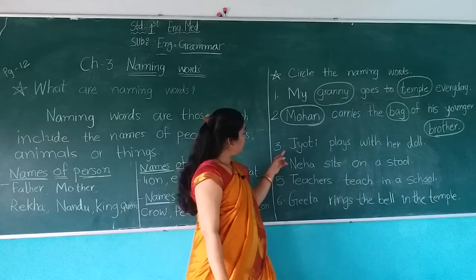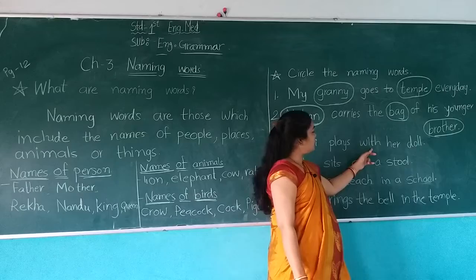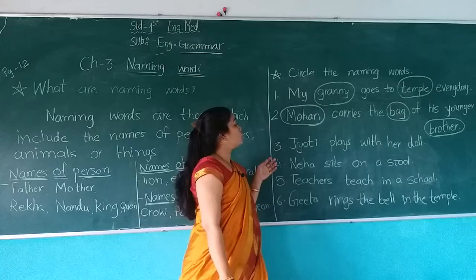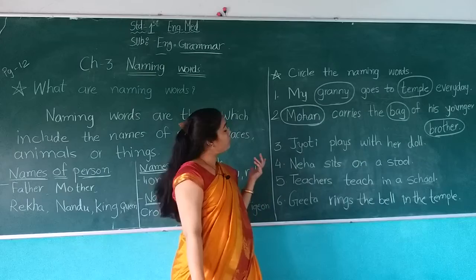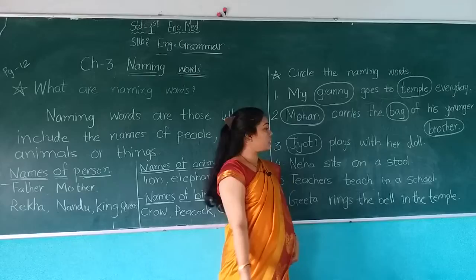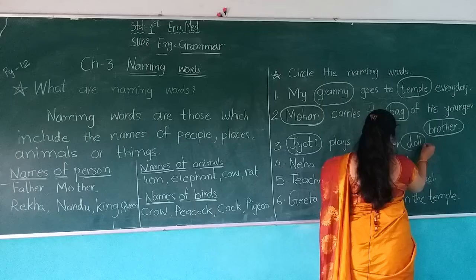Number 3: Jyoti plays with her doll. Which names are used in this sentence? Jyoti is a name of a person, so we will do a circle on Jyoti. And another naming word — noun — used here is doll. Doll is a name of a thing, so do a circle on doll.